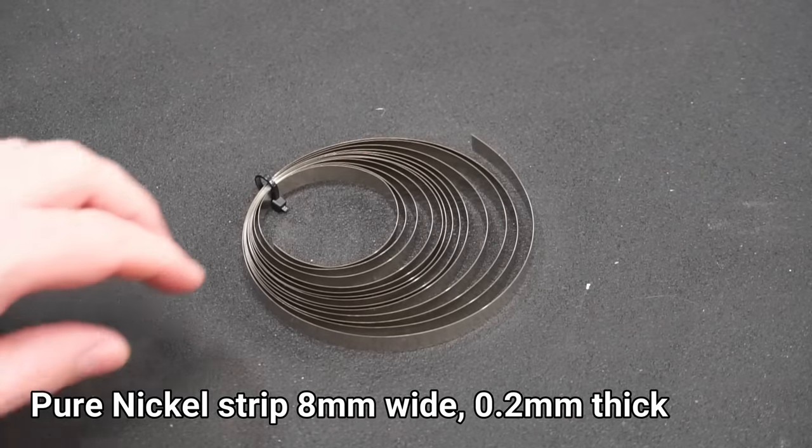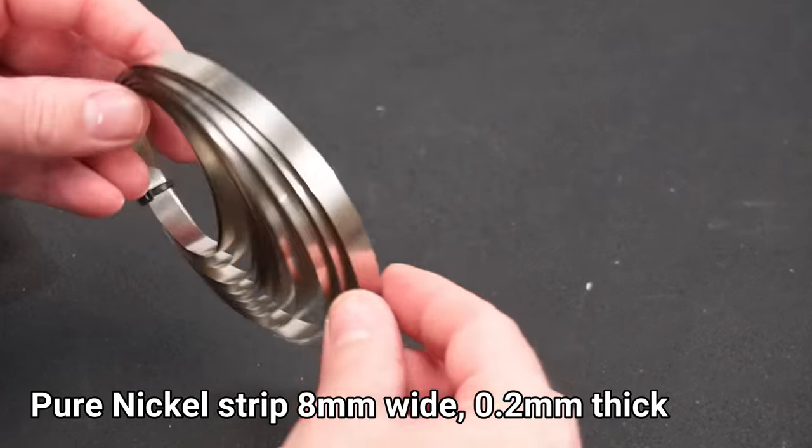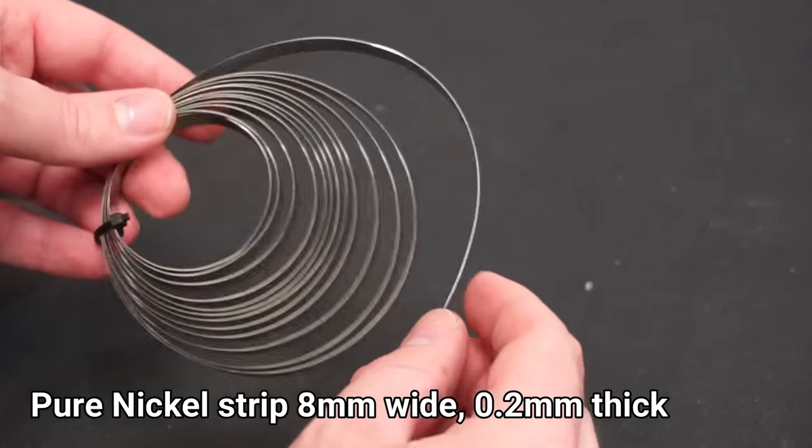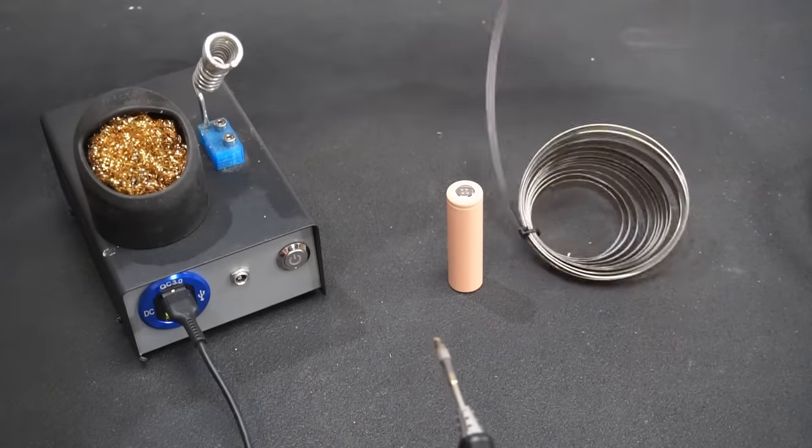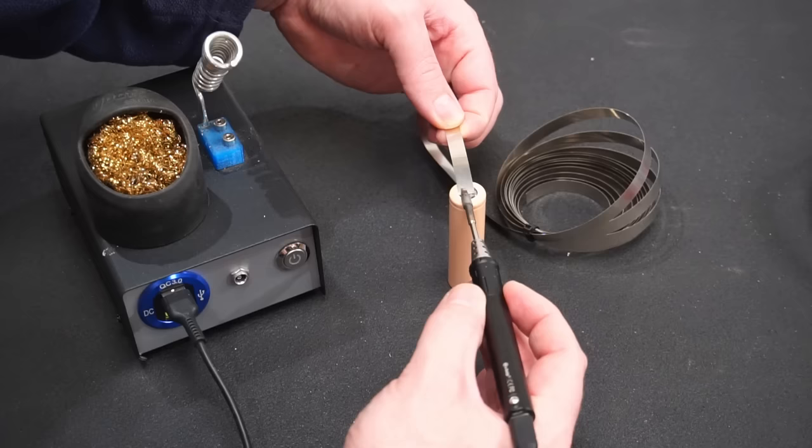To connect the cells together, I'll be using pure nickel ribbon I purchased online. Now when it comes to connecting the nickel strips to the cells, you might be tempted to use a soldering iron as you probably already own one, but don't.